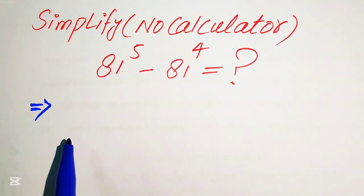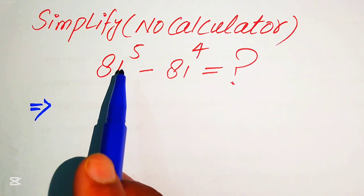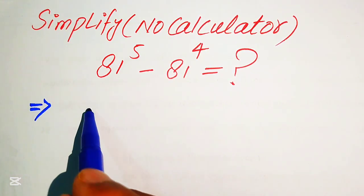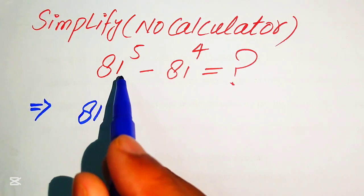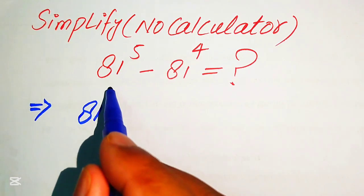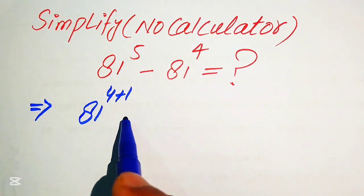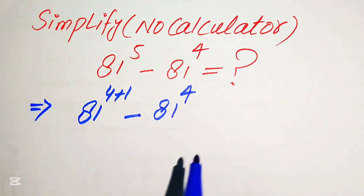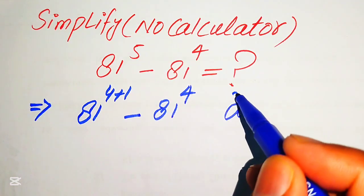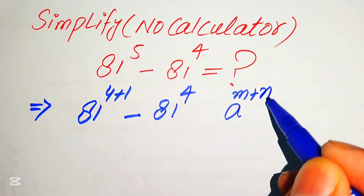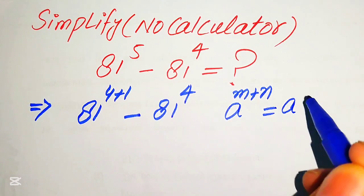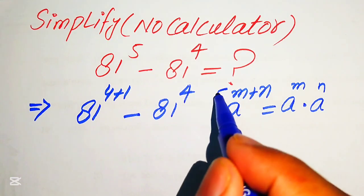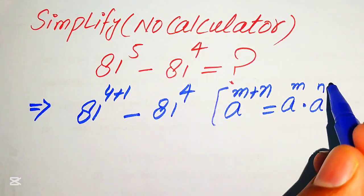The very first thing we are going to do is focus on the exponent of the first term, and the exponent is 5. We rewrite this 5 as 4 plus 1, giving us 81 to the power of 4 plus 1, minus 81 to the power of 4. Now we will apply the exponent law: a to the power of m plus n equals a to the power of m multiplied by a to the power of n.